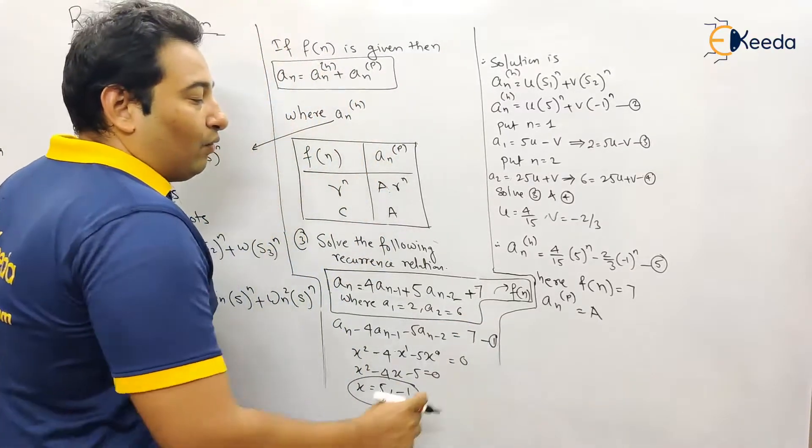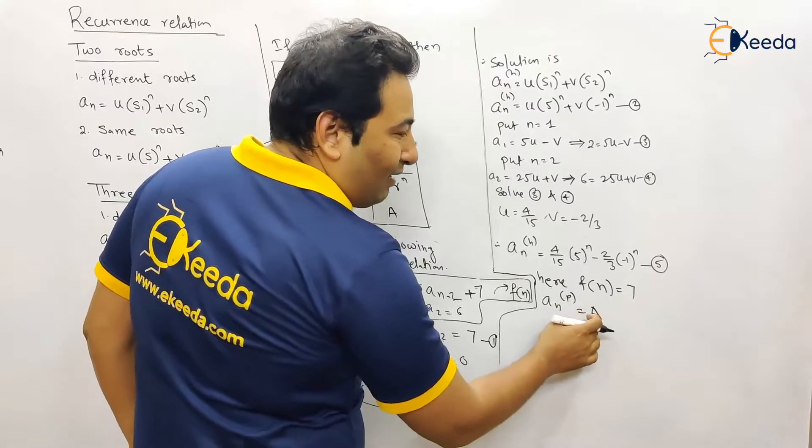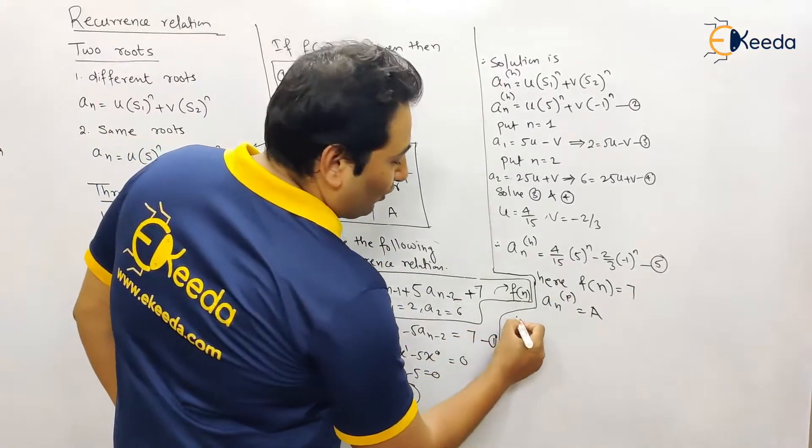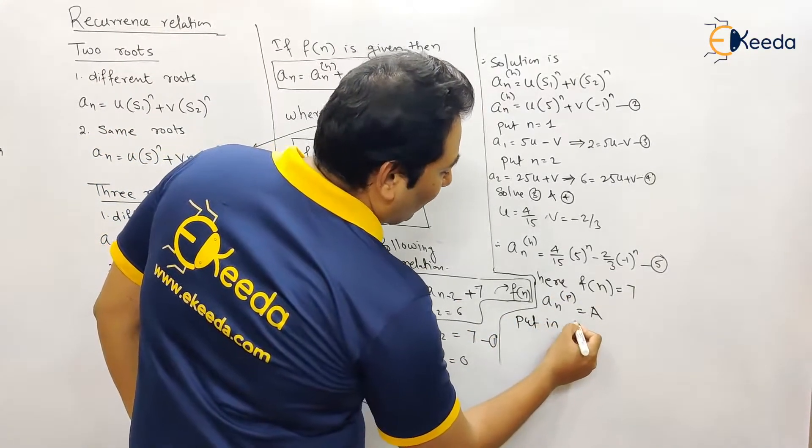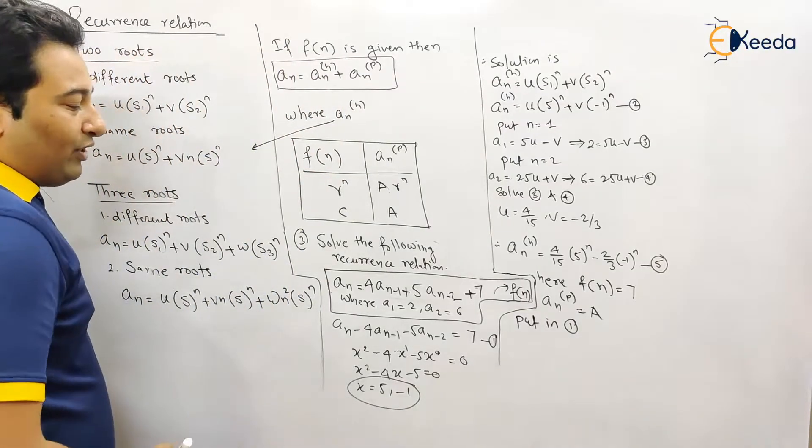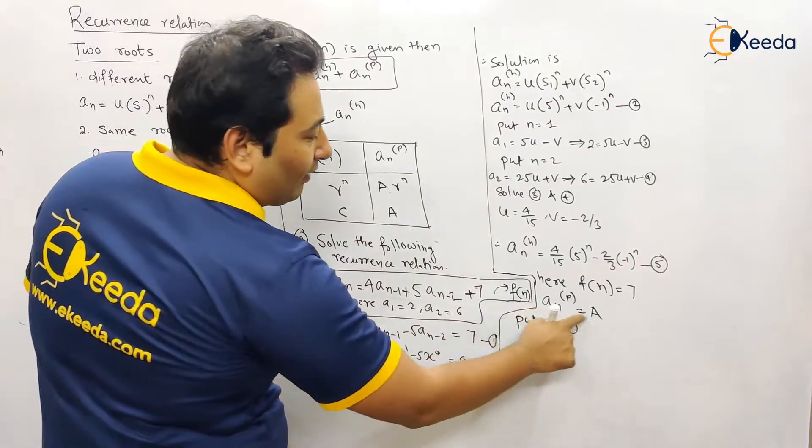So what we did in the last example: whatever is your A_np, we put in equation number one. Let us put in equation number one. So in place of A_n, I'm going to put a.